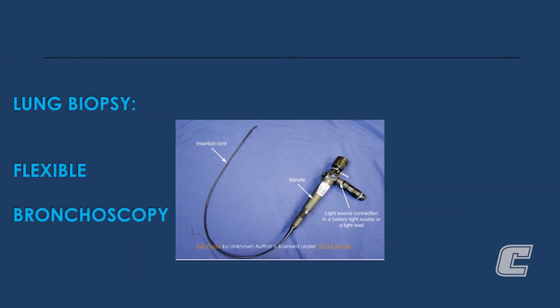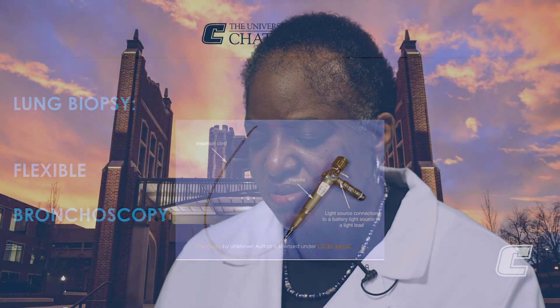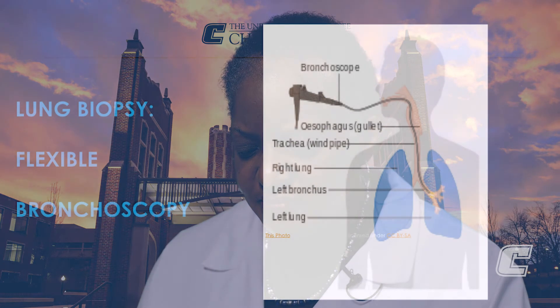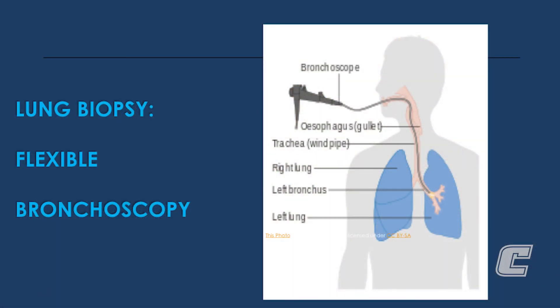This is a picture of a flexible bronchoscope, an instrument frequently used to obtain lung biopsies and to diagnose lung cancer. The procedure using this instrument is called flexible bronchoscopy. This diagram shows how the flexible bronchoscope is inserted through the mouth, through the vocal cords, down the windpipe, and into the lower airways of the lungs, and advanced to the area where the biopsy is needed.